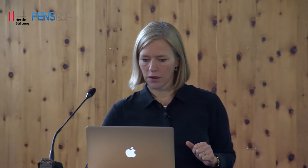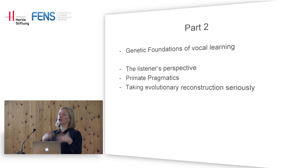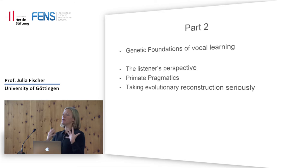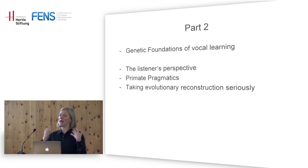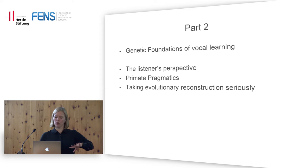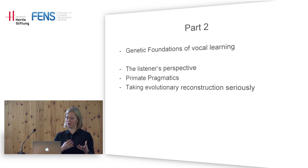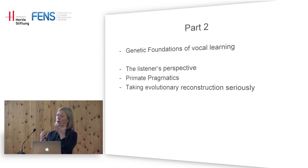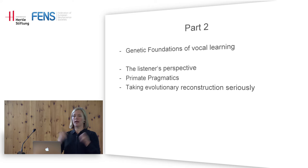Now we're coming to Part 2. In the first part we learned there is very limited evidence for vocal learning — these patterns appear rather fixed. The question is why, and what can studies of genetic foundations of vocal production tell us? I will also move on to the listener's perspective and present a study on what I call primate pragmatics: do these monkeys take contextual information into account when they respond to calls?